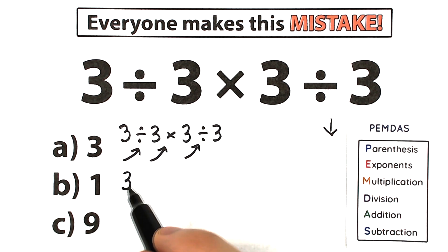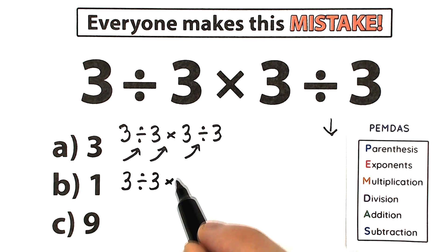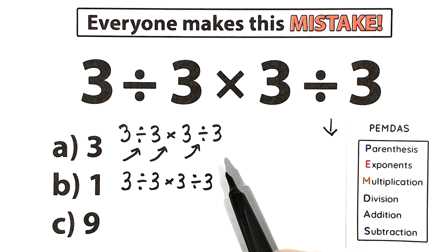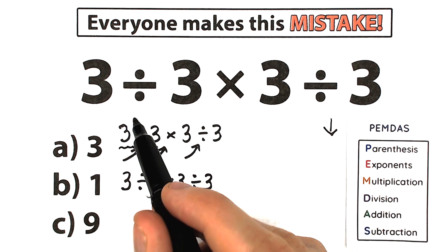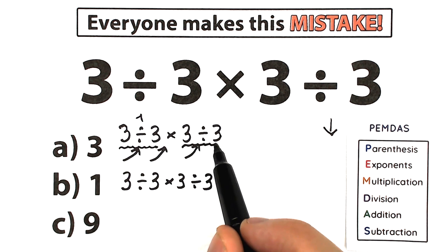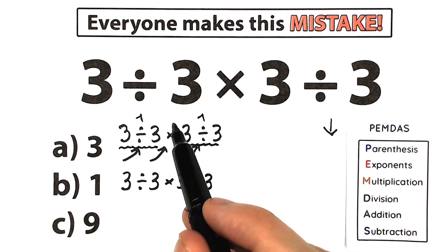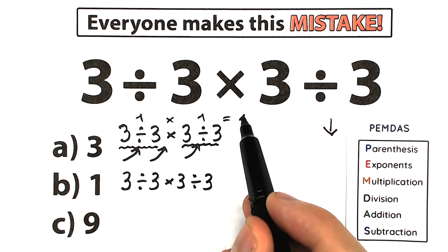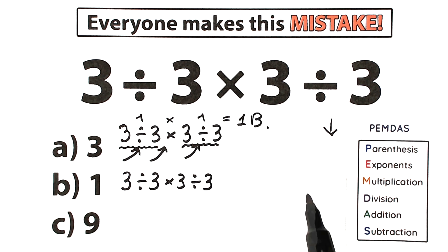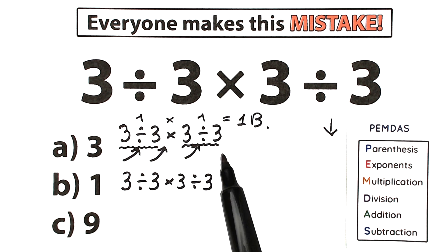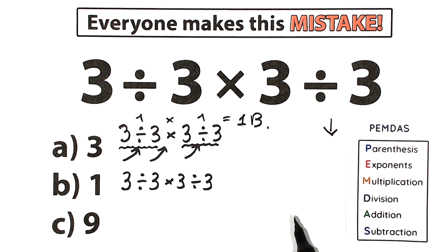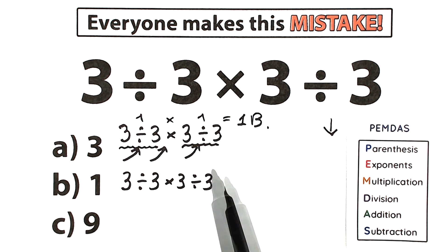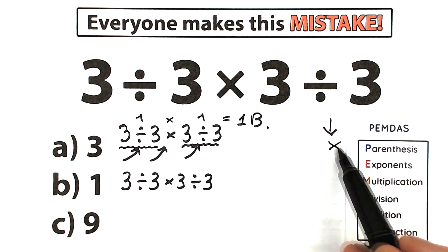Let's go through the steps and apply PEMDAS to our expression. We have 3 divided by 3 times 3 divided by 3. A lot of students solve this question like this: they say 3 divided by 3 on the left-hand side equals 1, and 3 divided by 3 on the right-hand side equals 1, and 1 times 1 equals 1. A lot of students choose option B and say the correct answer is 1. But as I said, this is randomly solved — let's solve it properly according to PEMDAS. We don't have parentheses, so we skip that part.